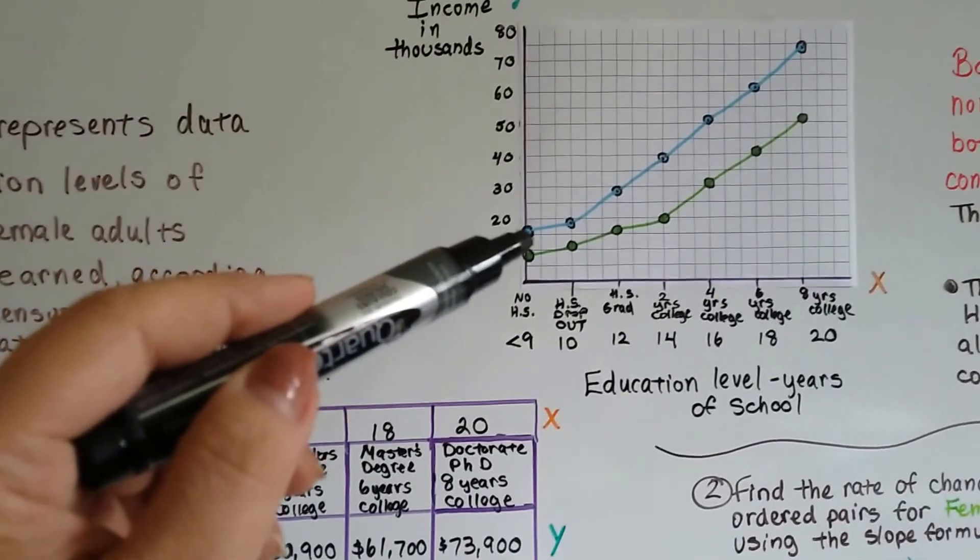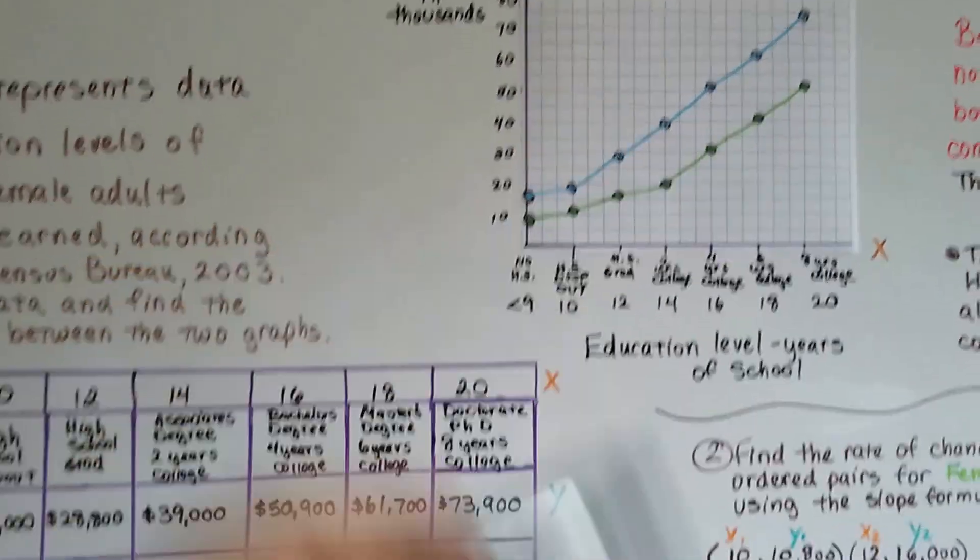And we can look at the line and tell that it's not perfectly straight, that it's non-linear.